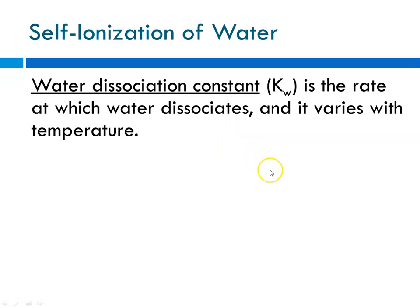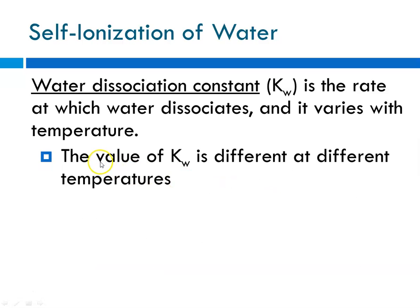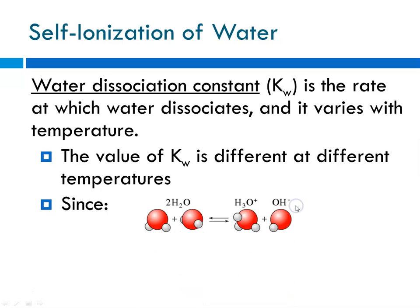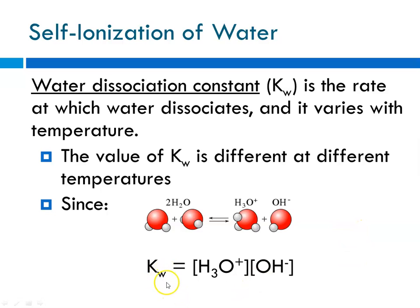The water dissociation constant Kw is the rate at which water dissociates, and it varies with temperature. Since H₃O⁺ equals OH⁻ in pure water, the Kw expression is: Kw equals the concentration of H₃O⁺ times the concentration of OH⁻. If you're ever asked to write the expression for Kw for water, you would write that. That was a favorite test question.